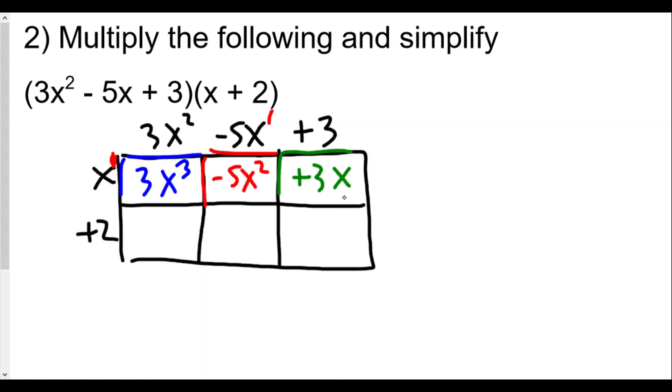You say, where did the x come from? Well, it's the same height for that level, for that first level here. So the height is x for each of those first level rectangles, and the lengths of each of those boxes on top are going to be each of the terms of the trinomial here.